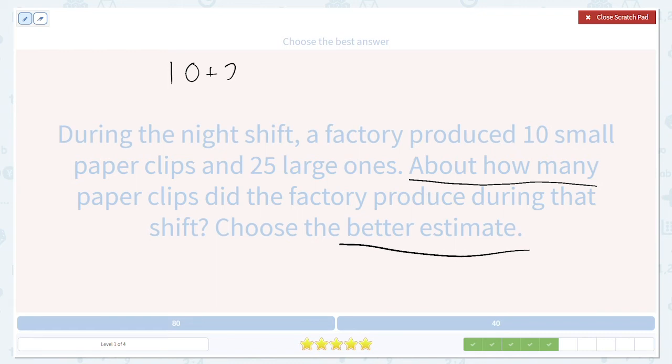10 plus 25. 10 is already a multiple of 10. We don't round it at all. It's already good. 25. Remember, five always rounds up. So it rounds to 30, giving us a total of 40 paper clips.